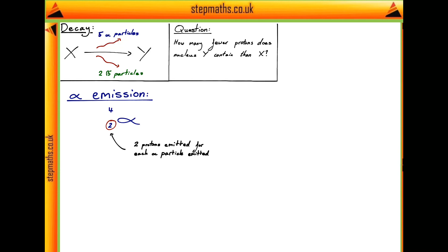Therefore, if we lose 5 alpha particles, then the contribution of the 5 alpha particles shall result in X losing 10 protons. There we are, so that's all we need to think about with our alpha emissions.